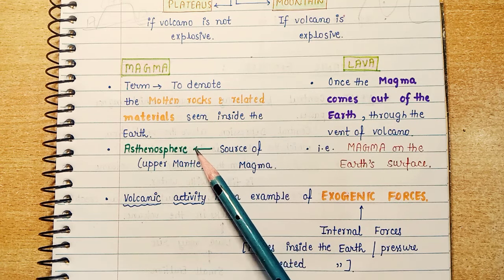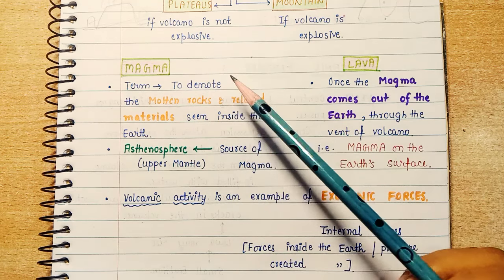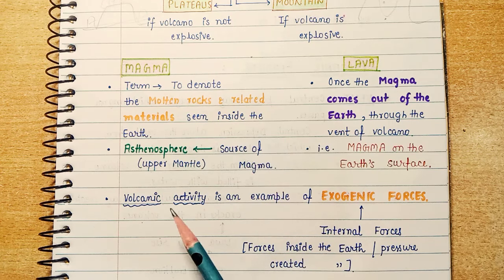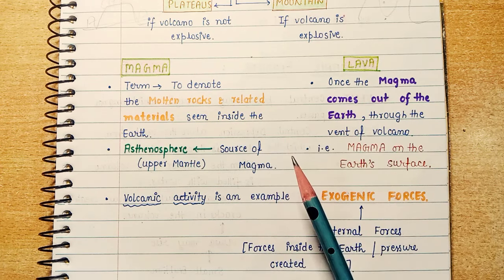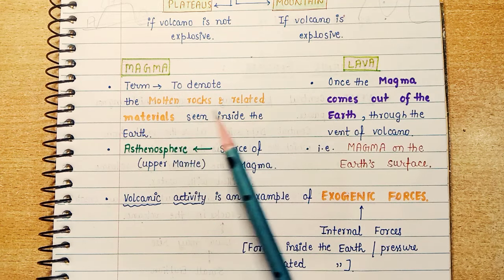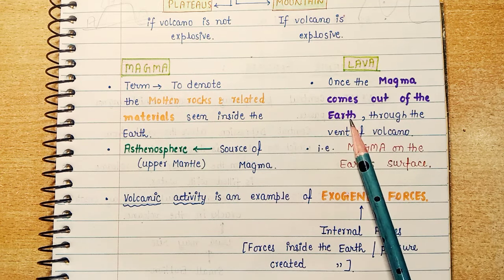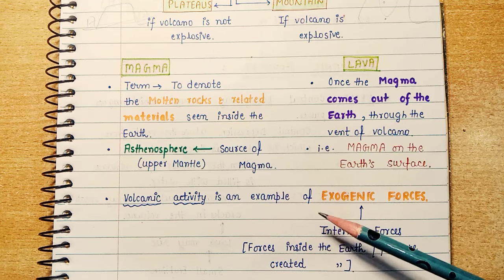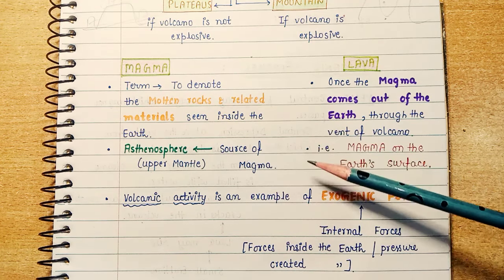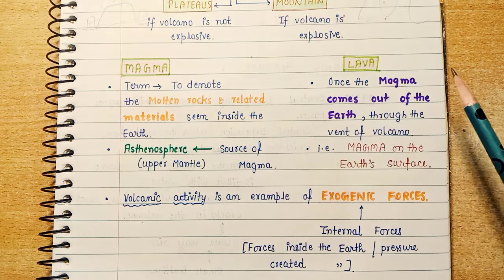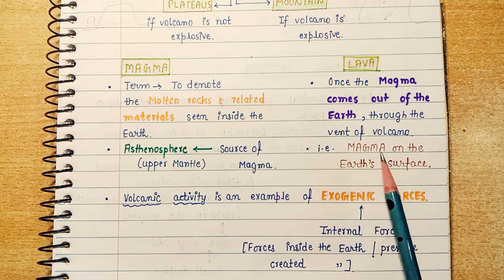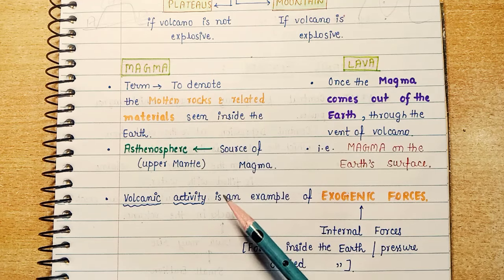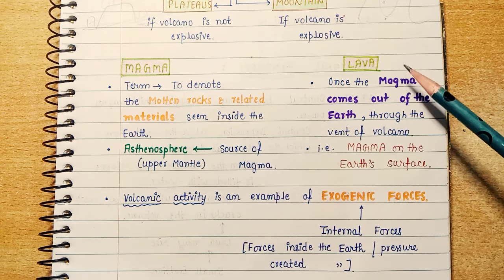Many exam questions come from magma: what is the source of magma? What is the asthenosphere? Magma is the molten rock material — gases, ashes, steam — all these things inside the earth are called magma. Now, lava: we call it magma when it is inside the earth, but once the magma comes out of the earth through the vent of a volcano and reaches the surface, it is called lava.